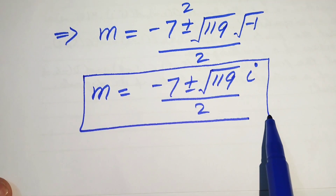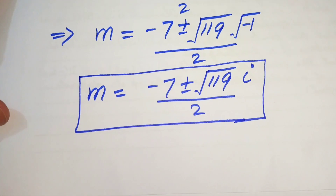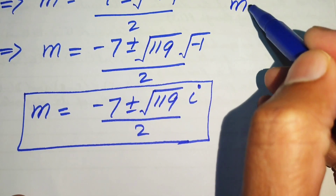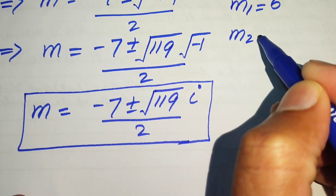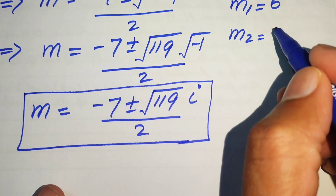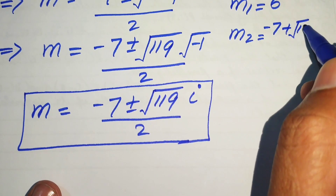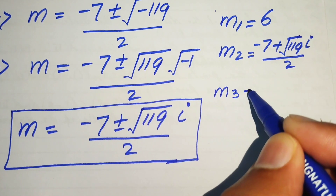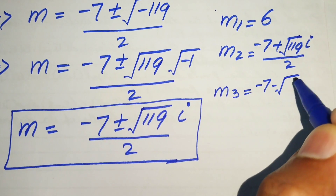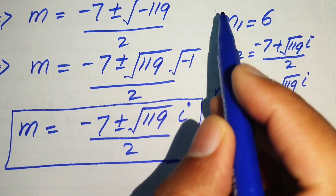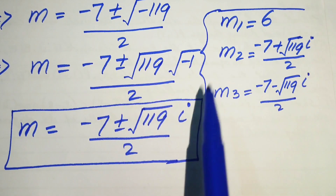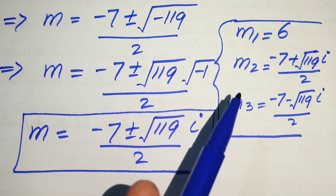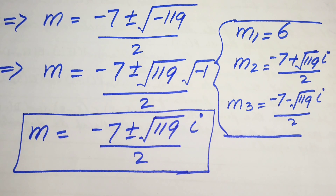The three roots of the given equation are: m₁ = 6, m₂ = (−7 + √119 · i) / 2, and m₃ = (−7 − √119 · i) / 2. The first root is real and the other two are complex roots of the given equation.